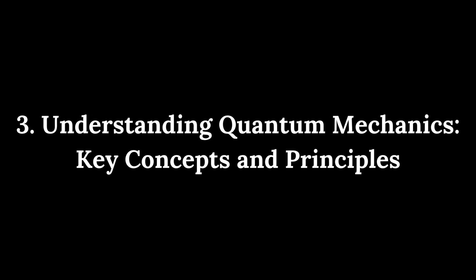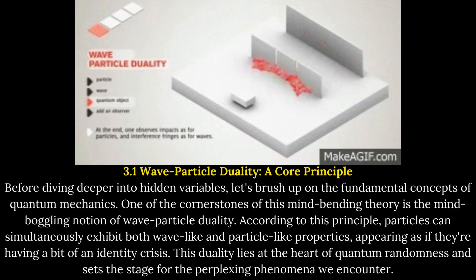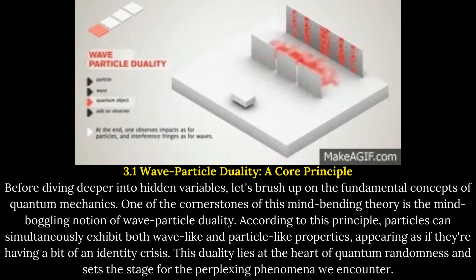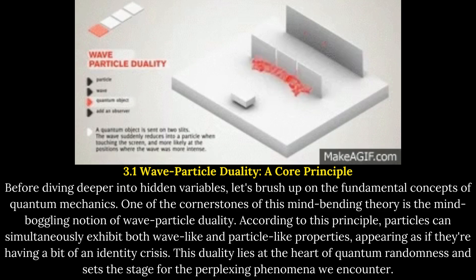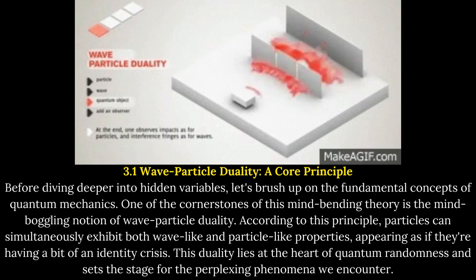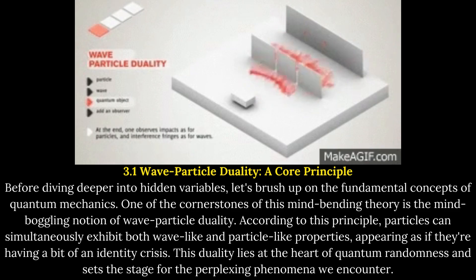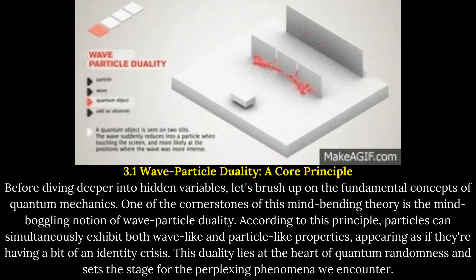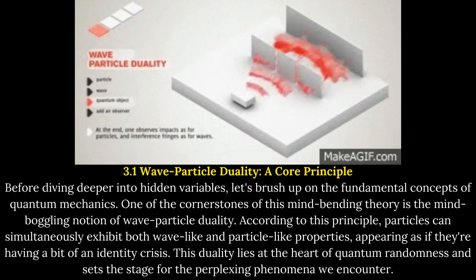Before diving deeper into hidden variables, let's brush up on the fundamental concepts of quantum mechanics. One of the cornerstones of this theory is the mind-boggling notion of wave-particle duality. According to this principle, particles can simultaneously exhibit both wave-like and particle-like properties, appearing as if they're having a bit of an identity crisis. This duality lies at the heart of quantum randomness and sets the stage for the perplexing phenomena we encounter.